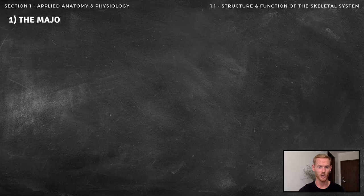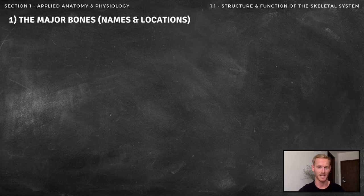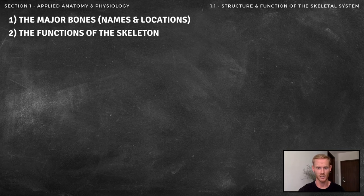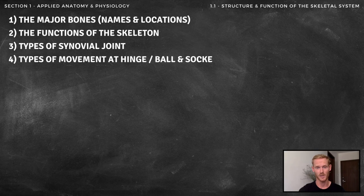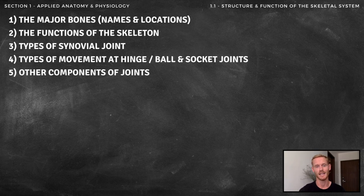For topic 1.1, you need to know the names and locations of the major bones, the functions of the skeleton, the different types of synovial joint, the types of movement possible at ball and socket and hinge joints, and the roles of ligaments, cartilage and tendons.